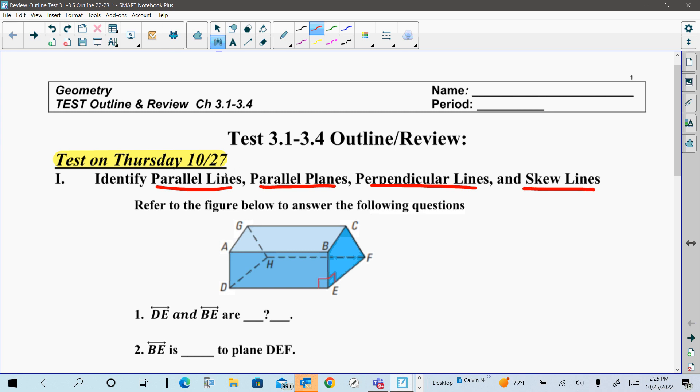Parallel, most of y'all are familiar with that—they never intersect, they never cross. Same thing with planes. Perpendicular, they have to intersect at exactly 90 degrees. And skew means three things: they are not parallel, they do not intersect, and not on the same plane.